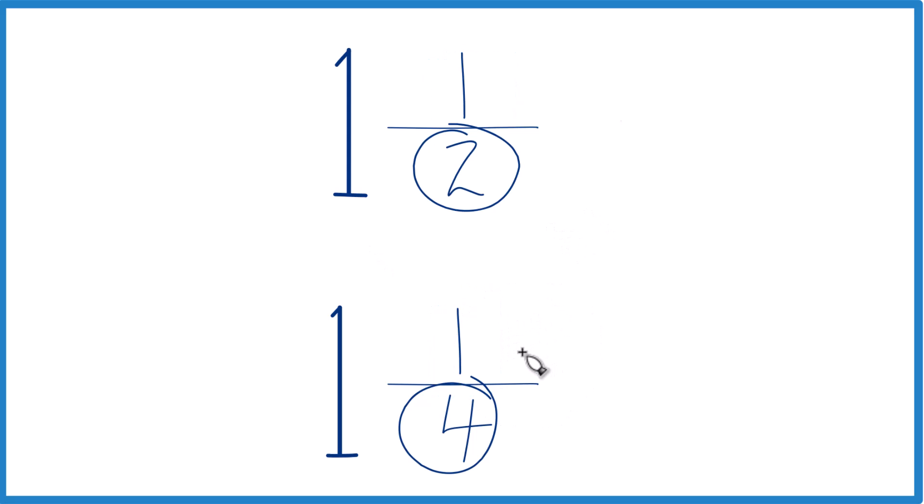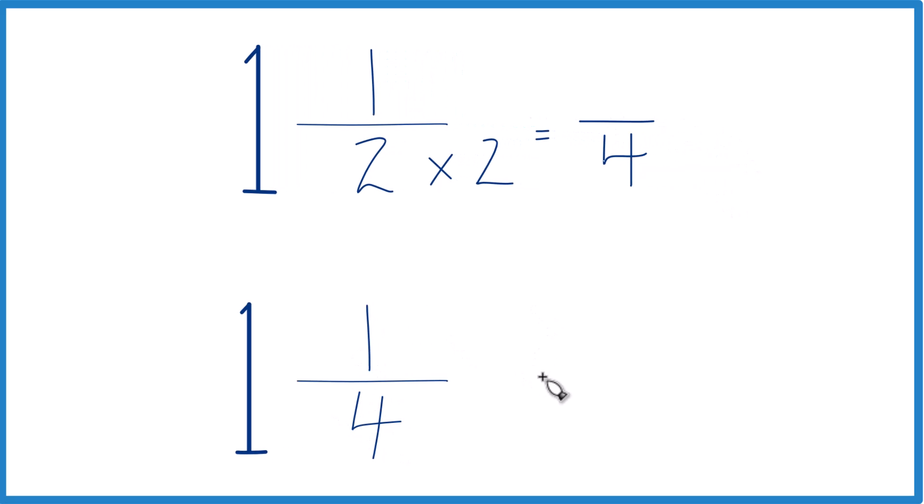So let's do that. Why don't we do it this way? Let's multiply 2 times 2 because that equals 4. And now here we already have 4, so let's just call this 1 fourth.